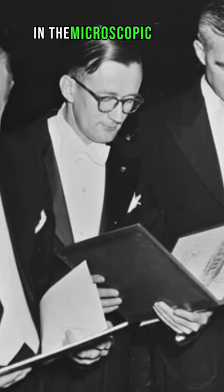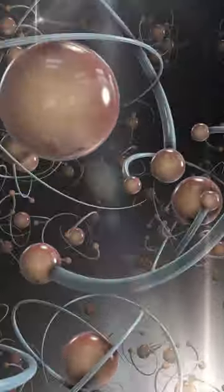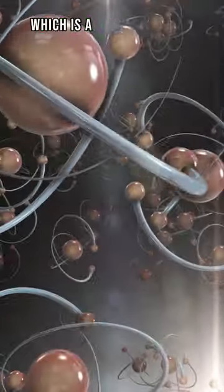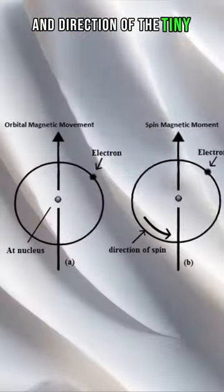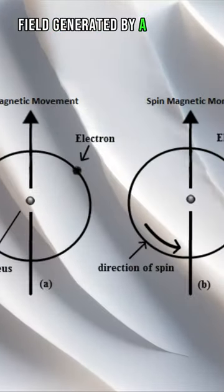In the microscopic world, fundamental particles like electrons possess magnetic moments, which is a measure of the strength and direction of the tiny magnetic field generated by a spinning electron.